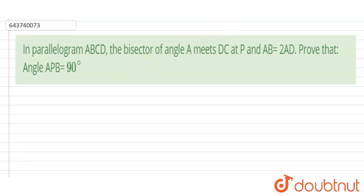So hello students, in this problem we have given a parallelogram ABCD. The bisector of angle A meets DC at point P and also it is given AB is equals to twice of AD. Then we are required to prove that angle APB is equals to 90 degrees.